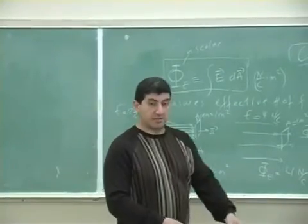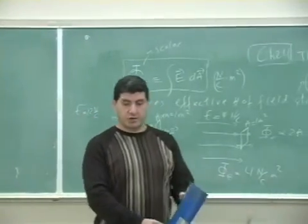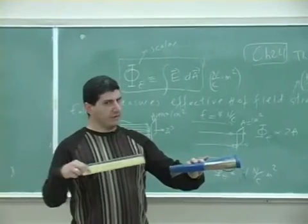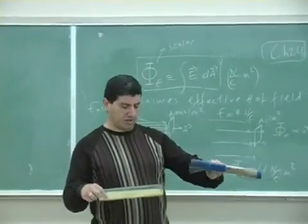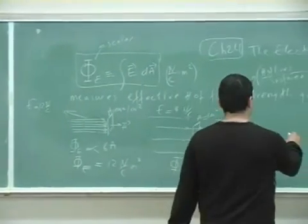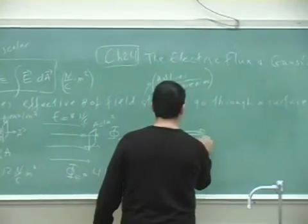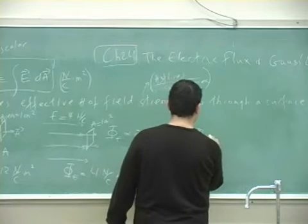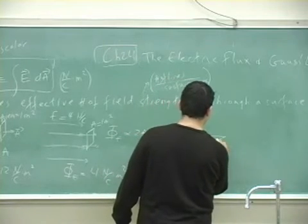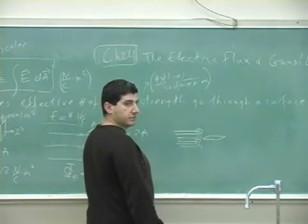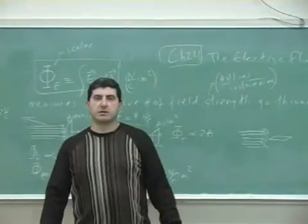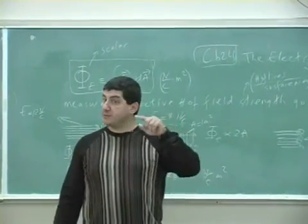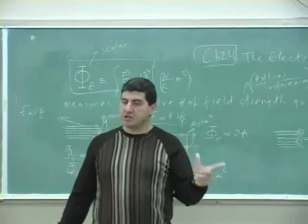Now, what if I tilt the area so it's oriented differently with the same E field? If I tilt the area so that it's parallel to the field lines, the flux would be zero — even if I keep the E field the same but change the orientation of the surface.